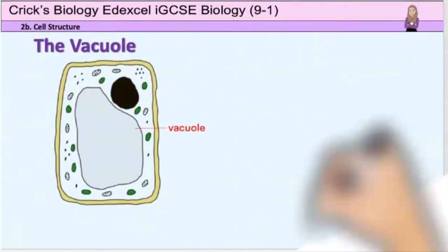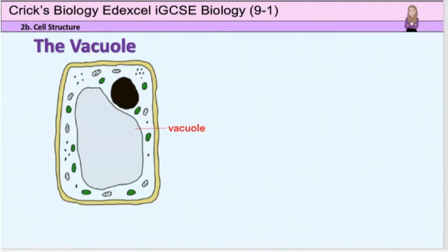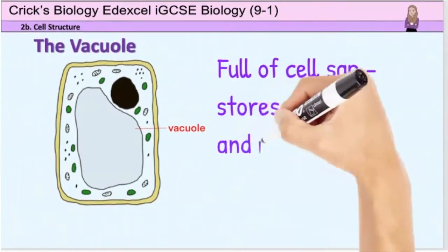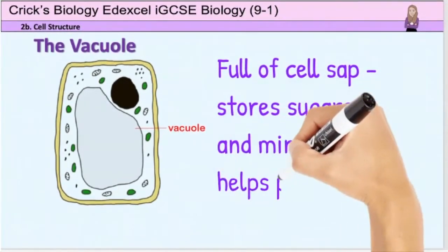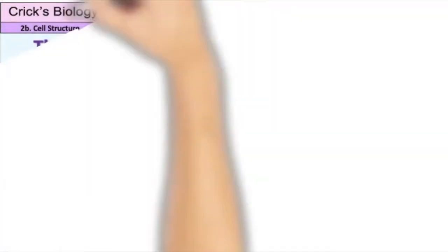The permanent vacuole in the centre of the cell is surrounded by its own membrane. It is filled with cell sap, which stores sugars, minerals, and other useful substances. It also helps to support the plant by swelling with water and pushing out against the cell wall. In brief, the vacuole contains cell sap and helps with support.